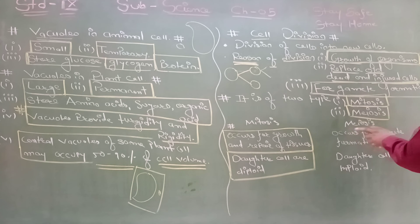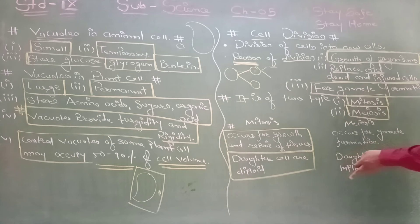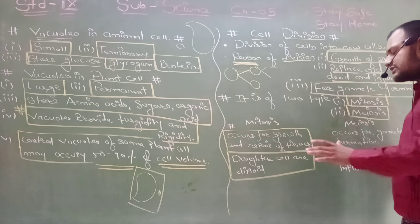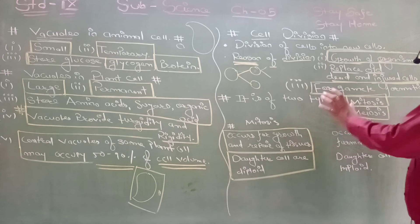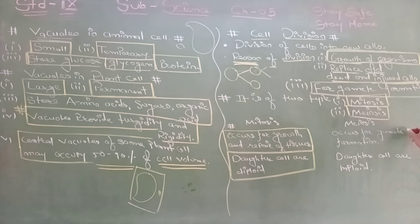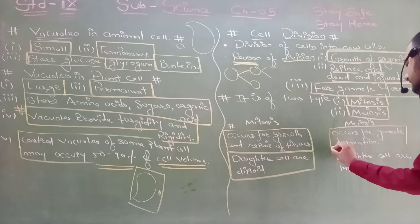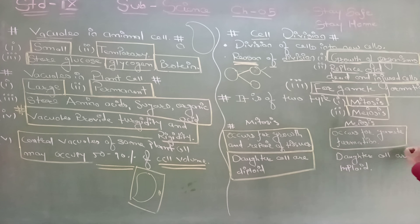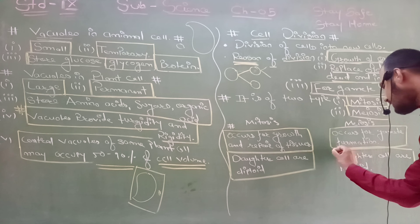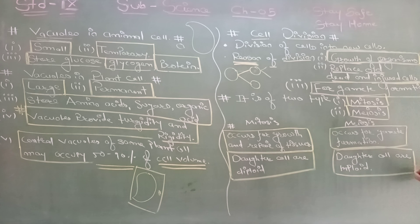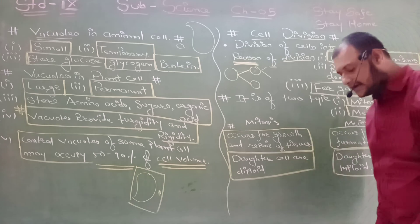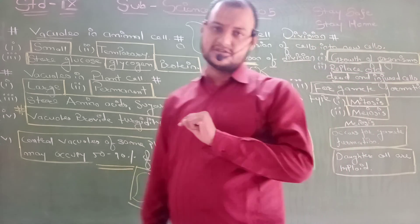Meiosis occurs for gamete formation, and daughter cells produced are haploid. Please remember: for meiosis, daughter cells are haploid; for mitosis, daughter cells are diploid.